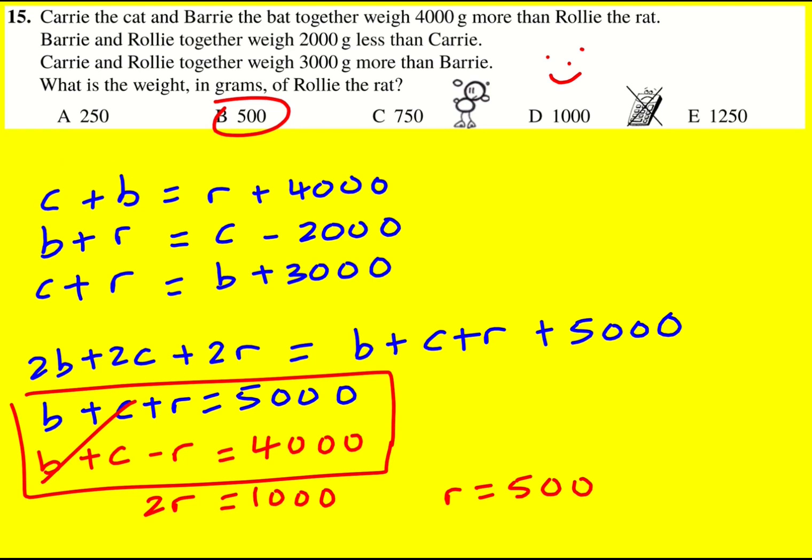They actually just focus on adding the second two equations. So now we're going to get B + C + 2R = B + C + 1000.